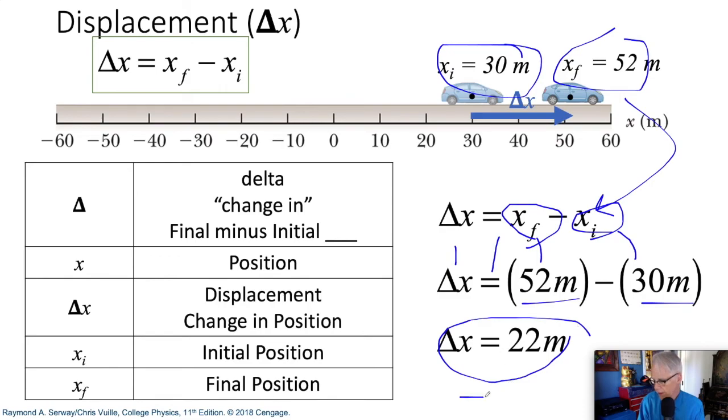We go 52 minus 30 and we get 22 meters. Notice that this is positive. It is going in the positive direction. Here's our vector. And that's a feel of how we use displacement.